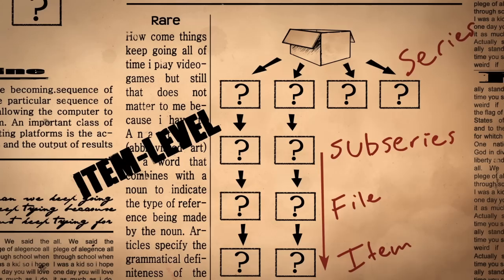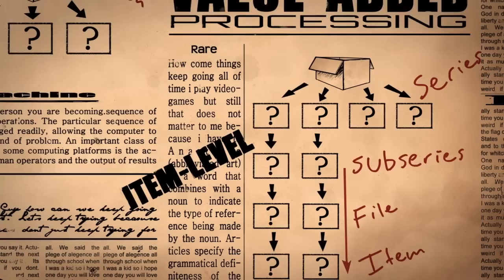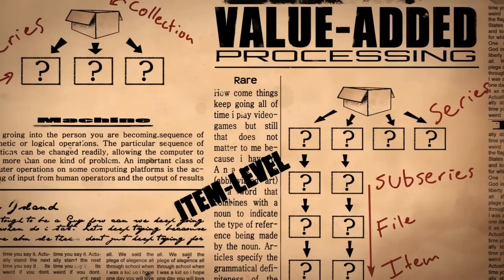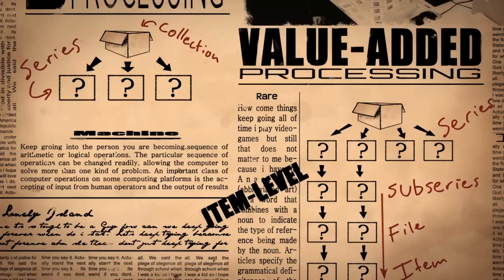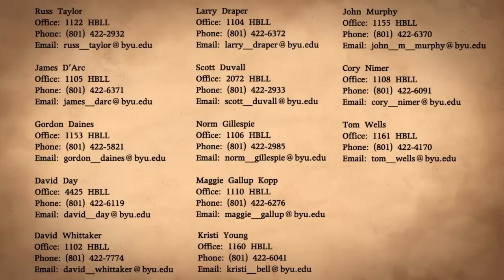Item-level processing is an extension of value-added processing and is the description of all materials in a collection at the item level. Materials that receive item-level processing are determined by the Perry Special Collections Board of Curators. Photograph collections typically receive item-level processing, as it is difficult for researchers to know which photographs will be useful to their research if the photographs have not been described individually. If you have any questions, please consult your curator.